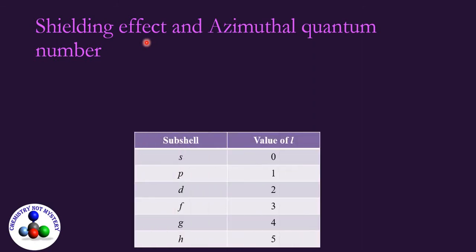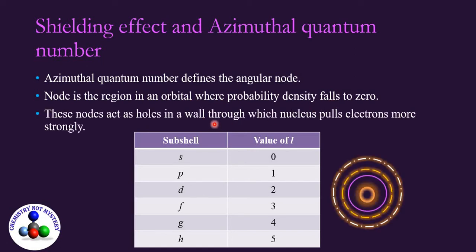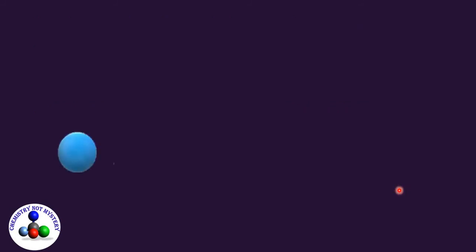Azimuthal quantum number defines the angular node. A node is the region in an orbital where probability density falls to zero. These nodes act as a hole in a wall through which nucleus pulls electrons more strongly. Shape of s orbital is spherical and the value of azimuthal quantum number is zero for it. That means electron density is equally distributed and there is no node through which electrons can pull the outer electrons.